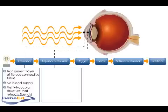After passing through the cornea, light passes through the aqueous humor. Aqueous humor is a clear fluid continually produced by capillaries in the ciliary body, the circular muscle that surrounds the edge of the lens.